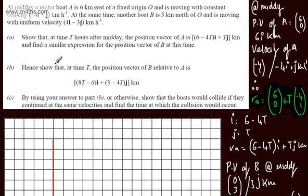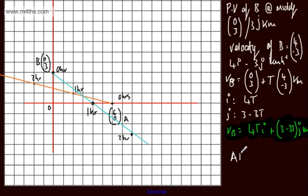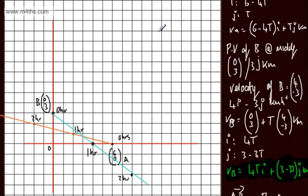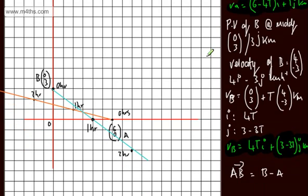In part B, it says: hence show that at time t, the position vector of B relative to A is (8t minus 6)i plus (3 minus 4t)j kilometres. The position vector of B relative to A is vector AB, and AB equals rB minus rA. All I'm doing is taking rB and subtracting rA.